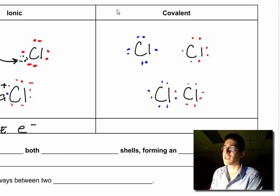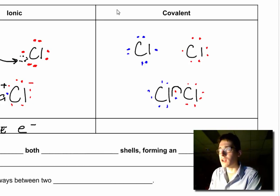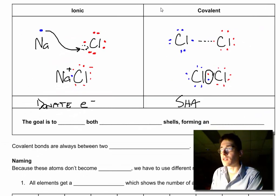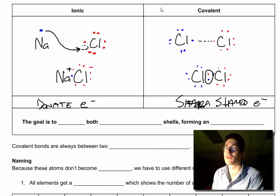Now each chlorine atom has eight valence electrons, and there's a shared pair of electrons right here in the middle. We do this by looking at the single electron left over in the valence shell. This is a shared electron pair in between them.